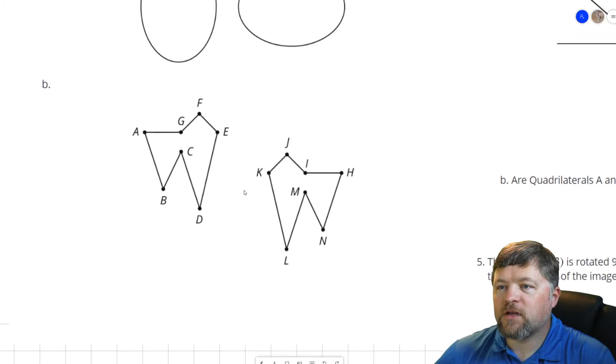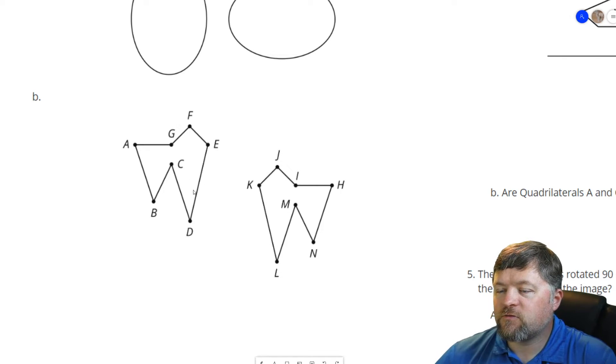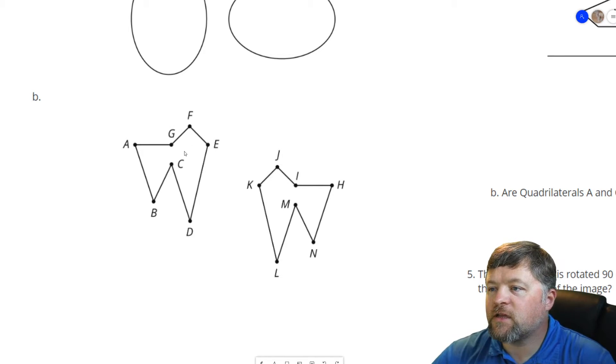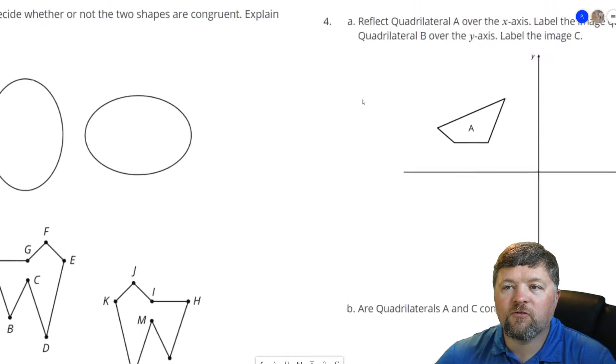Now next one I could do the same thing. Trace it. This one is trickier for me to try and do digitally but this looks like it is a reflection. So if I were to take this figure and reflect it over this line it would put it right here and then I would just have to translate it down. So yes those two figures are congruent to each other.